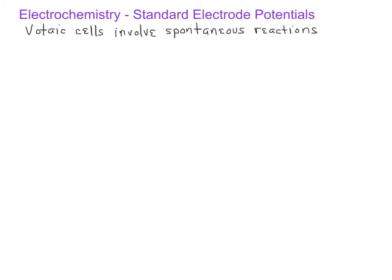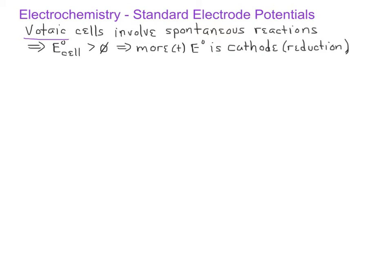Before moving on, it's important to remember what we've already learned about voltaic cells. Voltaic or galvanic electrochemical cells involve spontaneous electrochemical processes, meaning the standard cell potential will be a positive value. Since we have a positive standard cell potential for voltaic cells, the half-reaction with the more positive electrode potential will be the cathode undergoing reduction, and the half-reaction with the more negative electrode potential will be undergoing oxidation and serving as the anode.